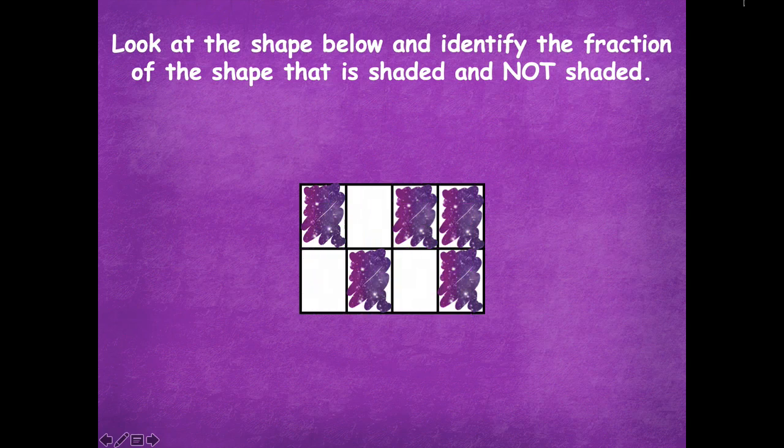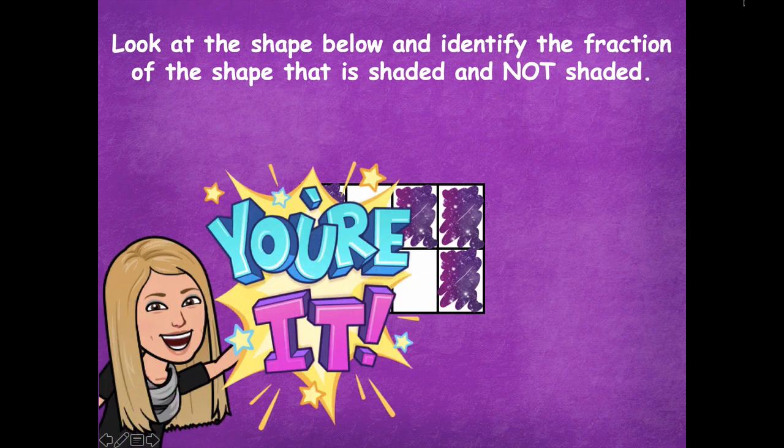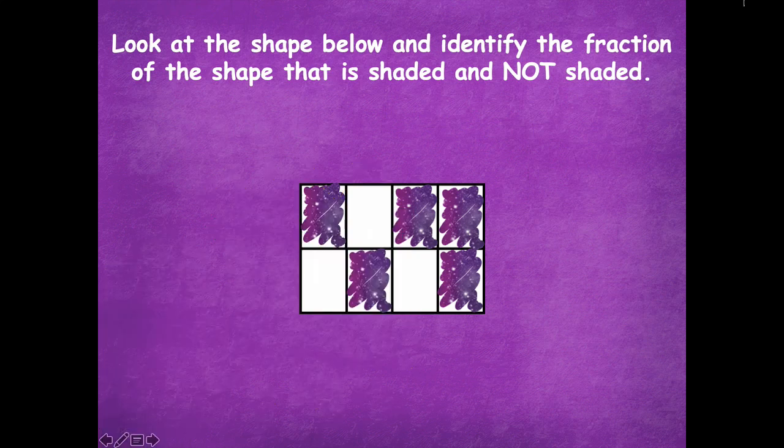We're going to look at this shape below again and find the part that is shaded and non-shaded. Pause the video and write on your board in fraction form the part that is shaded and non-shaded, then click play when you're ready to go over it together.